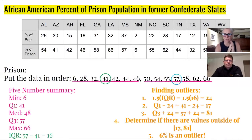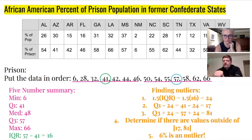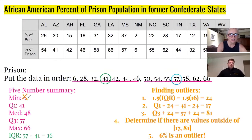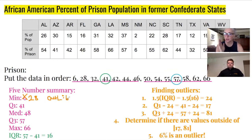Since the whisker can no longer go to six, it stops at the last non-outlier value, which is 28. So the minimum in the box and whisker plot actually changes to 28. You would indicate the outlier labeled at six, and your graph will depict that shortened whisker with the outlier plotted out to the side.